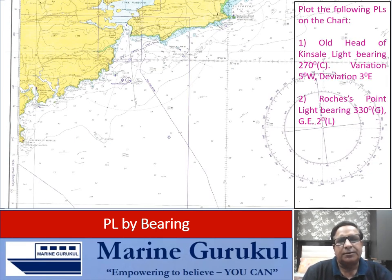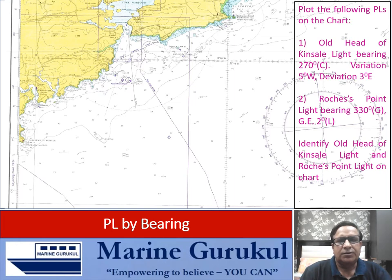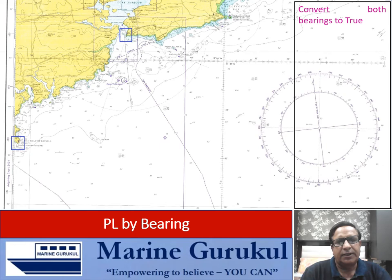Let us understand PL by bearing through examples. Plot the following PLs on chart: Old Head of Kinsale light bearing 270° compass, variation 5° west, deviation 3° east; and Raushe's Point light bearing 330° gyro, gyro error 2° low. First, identify these landmarks — Old Head of Kinsale and Raushe's Point — on the chart, then convert the compass and gyro bearings to true.